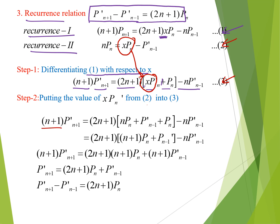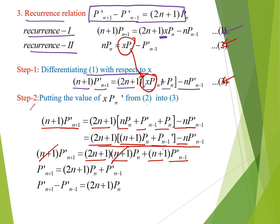Substituting, we get: (n+1) P_{n+1}'(x) = (2n+1)[n P_n(x) + P_{n-1}'(x)] + P_n(x) - n P_{n-1}'(x). Simplifying and cancelling (n+1) from both sides gives: P_{n+1}'(x) = (2n+1) P_n(x) + P_{n-1}'(x). Taking P_{n-1}'(x) to the left side proves the third recurrence relation.